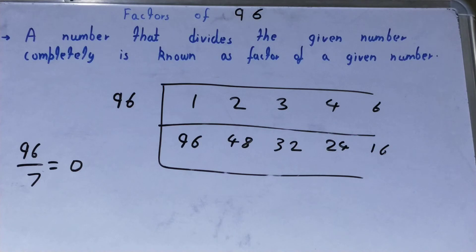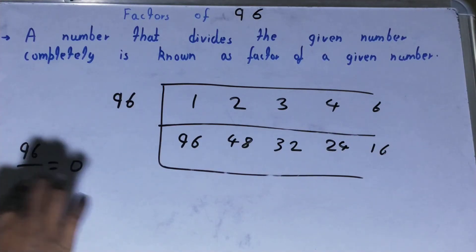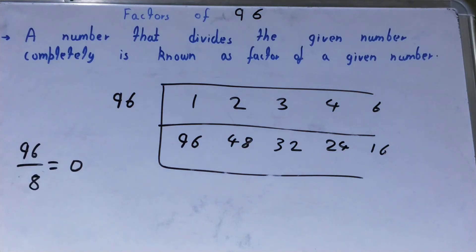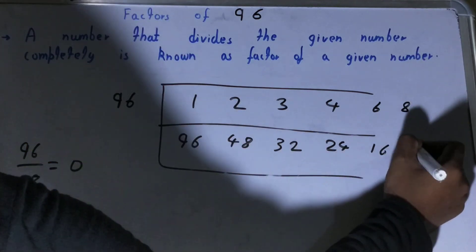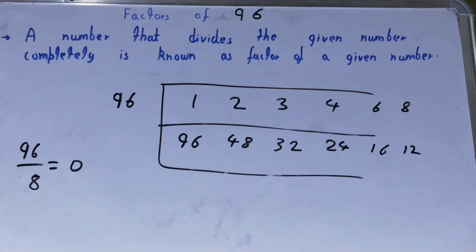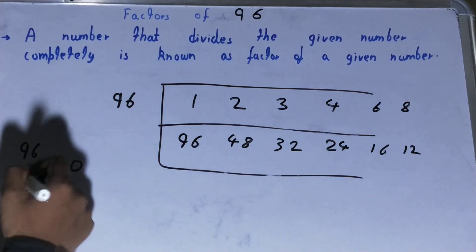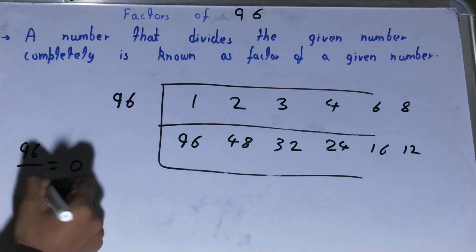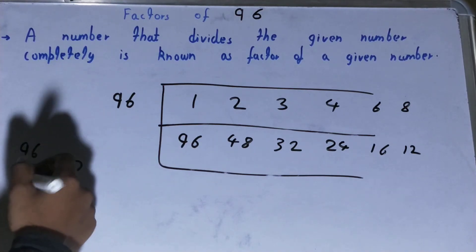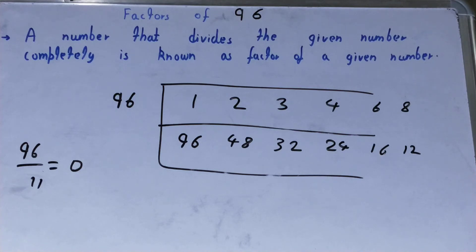After 6 comes 7. If you try it with 7, since 7 times 14 is 98, 7 is not a factor. After 7 comes 8 — 8 times 12 equals 96, so 8 is a factor and 12 is also a factor. After 8, if you try 9, you get remainder 6. With 10, remainder 6. With 11, remainder 8. So none of these are factors.